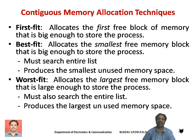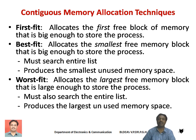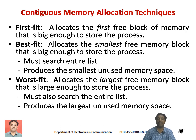In the first fit algorithm, the operating system allocates the first free block of memory that is large enough to store the program. It is one of the easiest methods and requires less time, because the moment it finds the first free block large enough to store that program, that block is allocated to the process.